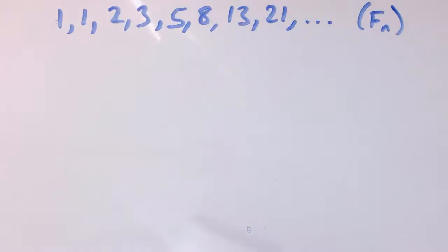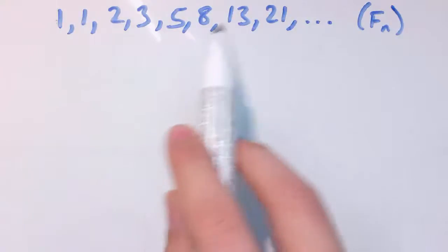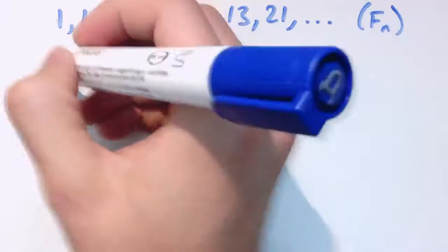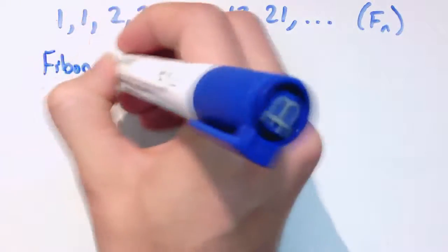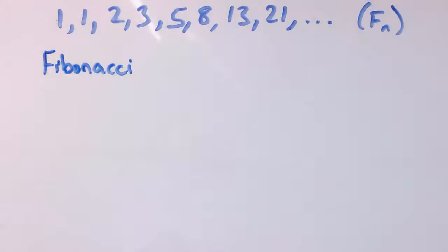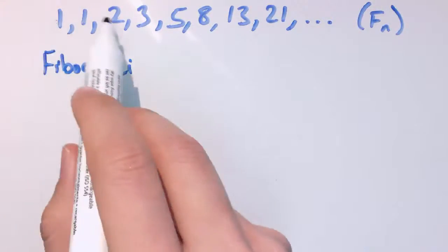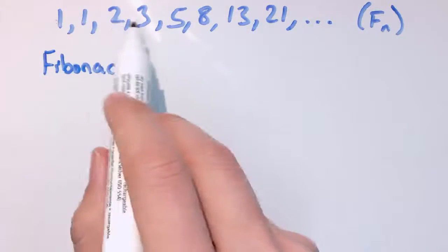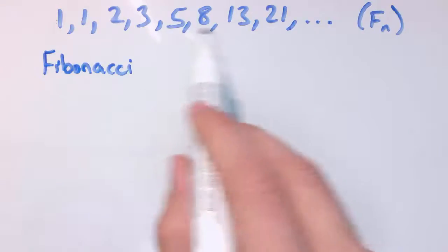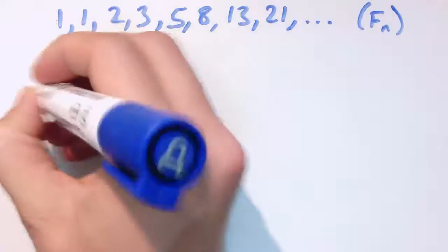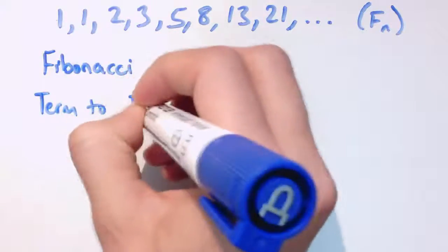One last sequence — a slightly different one: 1, 1, 2, 3, 5, 8, 13, 21. We'll call this capital Fn. This is the famous Fibonacci sequence. You can see how it works: you take the two terms before and add them together. 1 plus 1 gives 2, 1 plus 2 gives 3, 2 plus 3 gives 5, 3 plus 5 gives 8, 5 plus 8 gives 13, etc. This is quite hard to write in nth term form, but the term-to-term definition is much easier — though it doesn't rely only on the previous term.